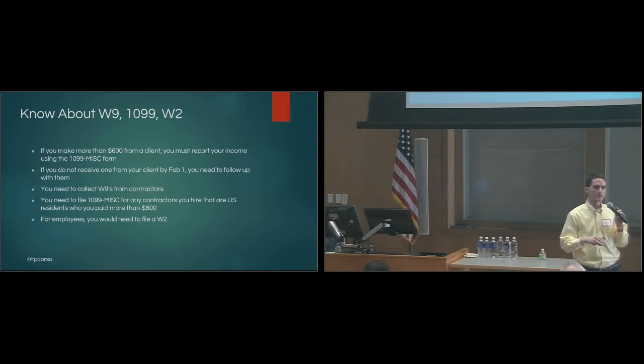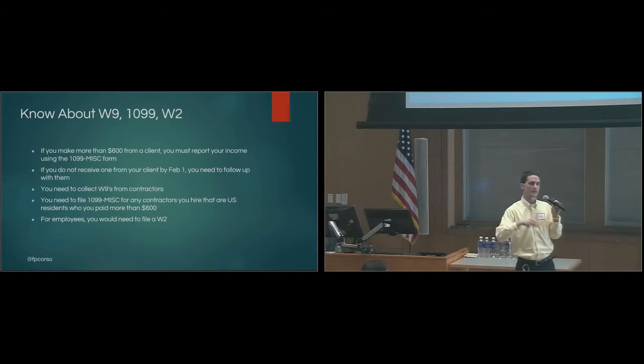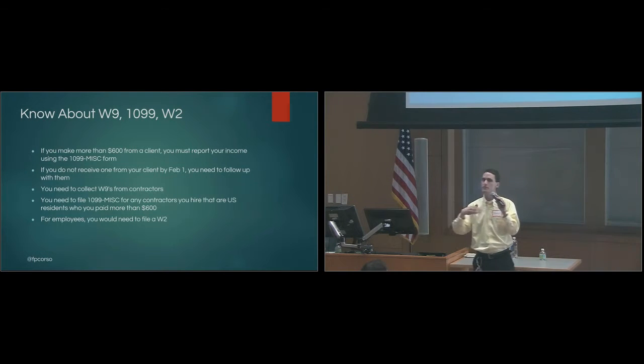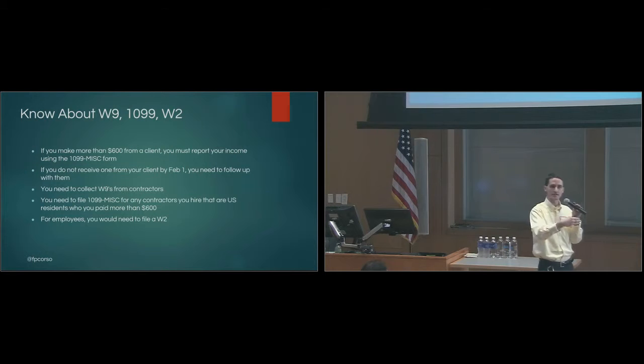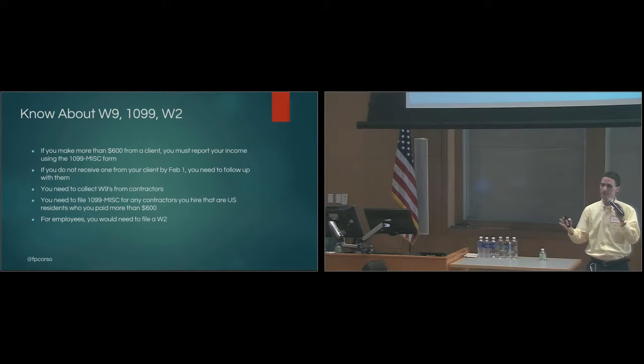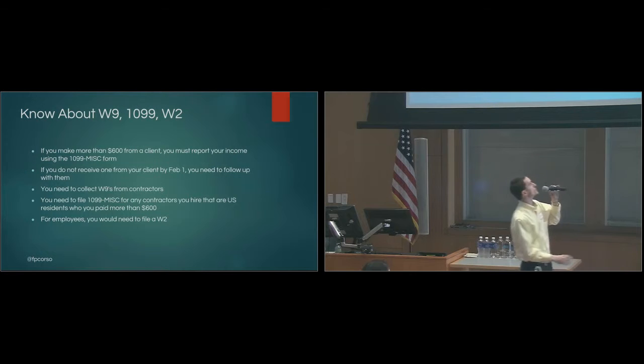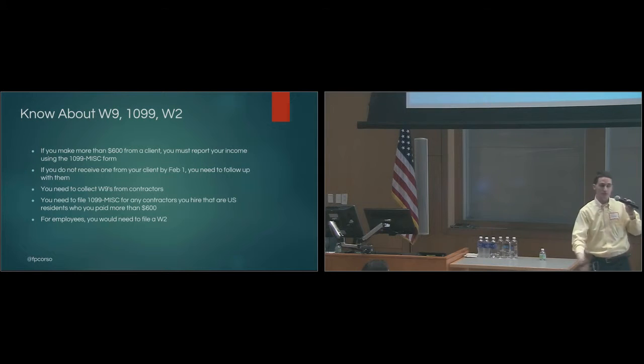And then the 1099 form is what says, hey, this is how much I've paid this person. So essentially, same thing on the opposite side. If you have a contractor, if you have lots of work, and you hire on a designer, or you bring on maybe a developer, and you have some work to send to them, you would do this the opposite way. You would collect a W-9 from them, and then issue them a 1099 if they have over $600 throughout that year.